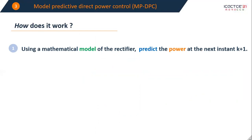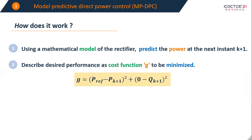First we use a mathematical model of the rectifier to predict the future values of the active and reactive powers. Then we describe the desired performance as a cost function g to be minimized. In this case we want to minimize the error between the reference and the predictive powers, expressed as g equals Pref minus Pk plus 1 squared plus zero minus Qk plus 1 squared.